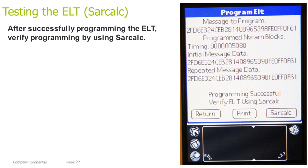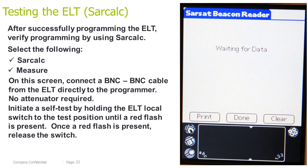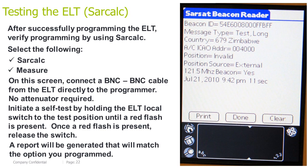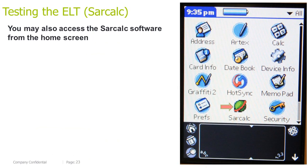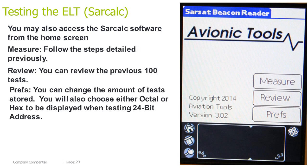Test the ELT 3000 using SARCALC software. After successfully programming the ELT, verify programming by using SARCALC. Select the following: SARCALC, then Measure. On this screen, connect a BNC to BNC cable from the ELT directly to the programmer — no attenuator is required. Initiate a self-test by holding the ELT local switch to the test position until a red flash is present, then release the switch. A report will be generated that will match the option you programmed. You may also access the SARCALC software from the home screen. Once open, you will find: Measure — follow the steps detailed previously; Review — you can review the previous 100 tests; Preferences — you can change the amount of tests stored, and choose either octal or hex address to be displayed when testing 24-bit address.